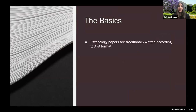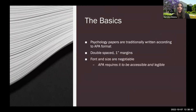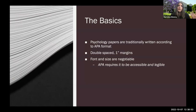Traditionally, we write psychology research papers according to APA format. That usually includes being double-spaced with one-inch margins. As for font size and what font you choose, those are kind of negotiable. The only APA requirement is that it needs to be accessible and legible. Some standards include Calibri 11, Arial 11, or Times New Roman 12 — all of those are really well accepted. But as long as it's readable, there's some flexibility there.